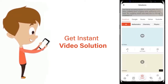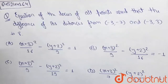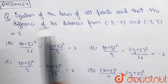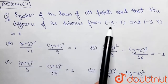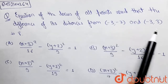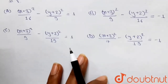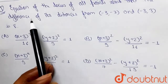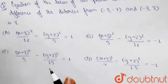Hello friends. The question says: find the equation of the locus of all points such that the difference of its distances from (-3, -7) and (-3, 3) is 8. So we have to find the locus of all those points whose difference of distances from these two points is 8.